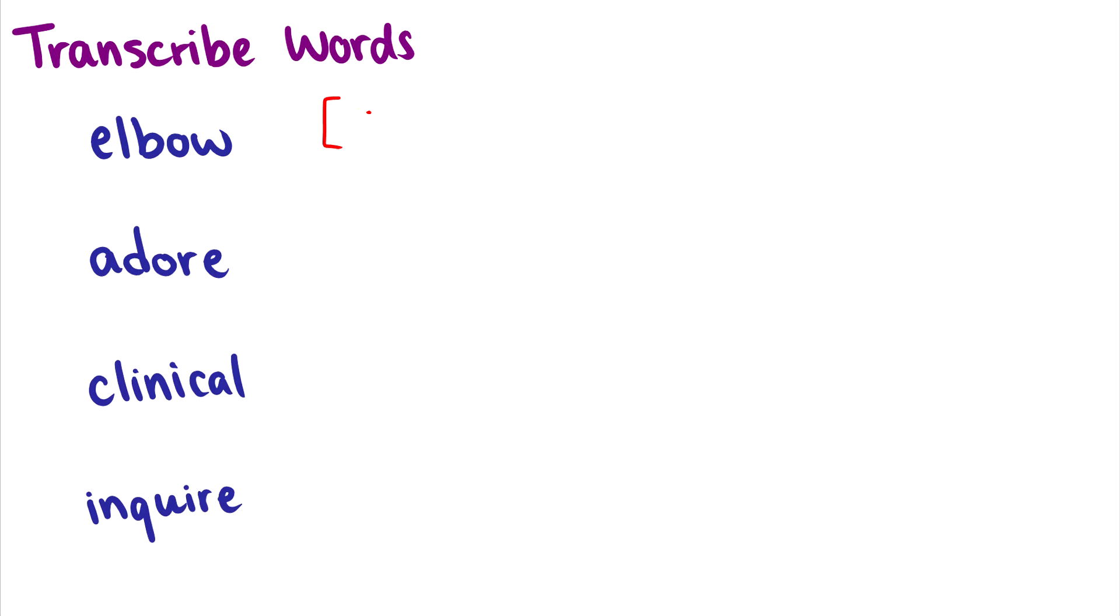So the first one, elbow. I hear an eh, I hear an l, I hear a buh, and I hear that o. So this has four segments. If I want, I can put a little diacritic above o to signal that it's a diphthong, but I am aware that it's a diphthong.